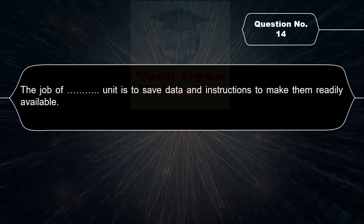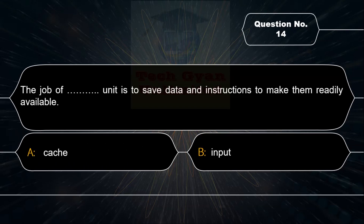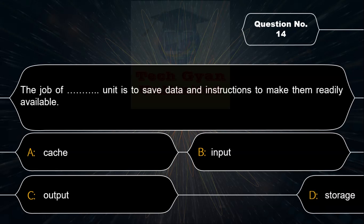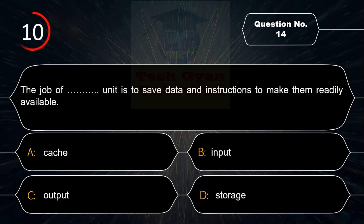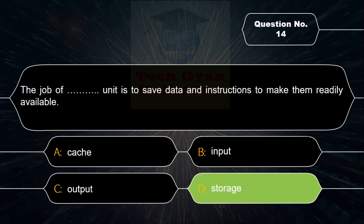The job of which unit is to save data and instructions to make them readily available? Option A: Cache, Option B: Input, Option C: Output, Option D: Storage. Correct answer is Option D — Storage.